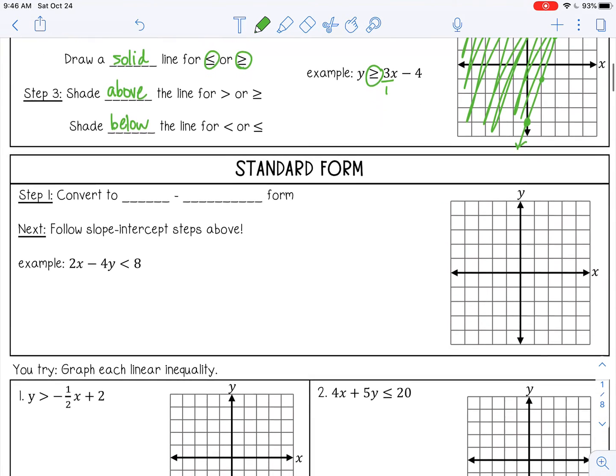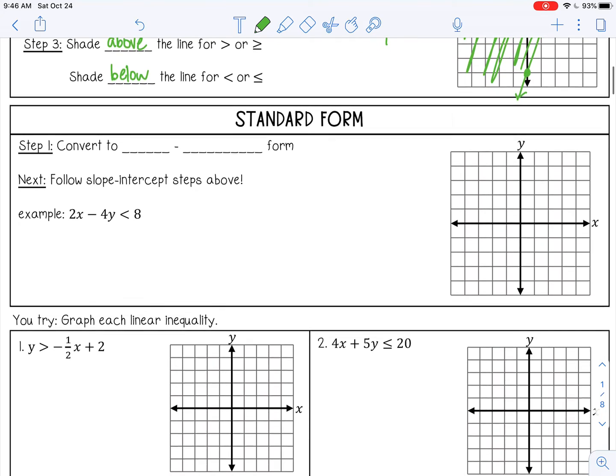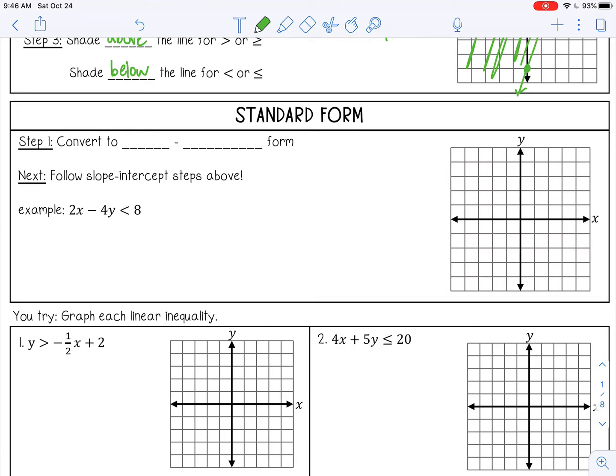If you have an inequality in standard form, first convert to slope-intercept form. The reason we want to do that instead of using the x and y intercepts is to make sure we're shading the correct way. If you just use the intercepts, you may accidentally shade the wrong way. Let's convert it to slope-intercept form.